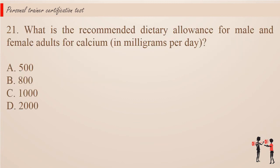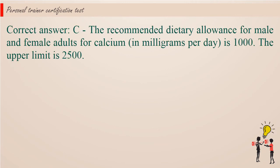Question 21. What is the recommended dietary allowance for male and female adults for calcium, in milligrams per day? a. 500. b. 800. c. 1,000. d. 2,000. Correct answer c. The recommended dietary allowance for male and female adults for calcium, in milligrams per day, is 1,000. The upper limit is 2,500.